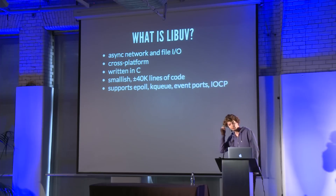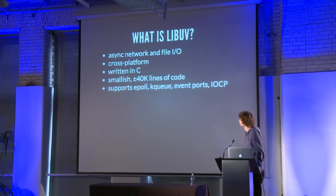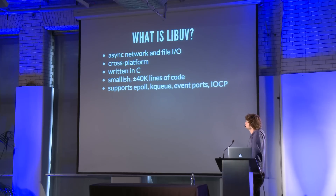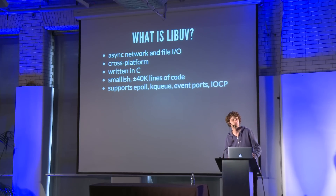Libuv is a relatively small C library that intends to provide a unified interface to the various platform-specific file and network APIs, in particular the asynchronous APIs. As such, it's written in C for maximum portability, also to make it easy to write bindings to other languages like JavaScript.